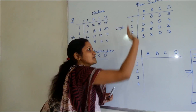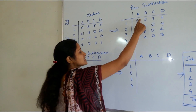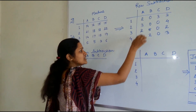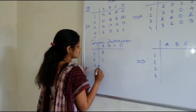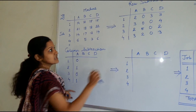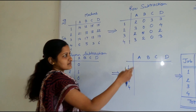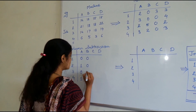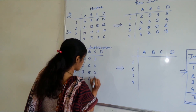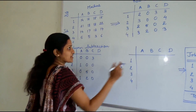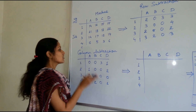The next step is column subtraction. The same method is followed but we consider each and every column separately. Consider the first column — the smallest number is 2, so subtract 2 from the complete column: 2 minus 2 is 0, 3 minus 2 is 1, 2 minus 2 is 0, and 3 minus 2 is 1. In the second column 0 is the smallest number, so subtracting 0 from all numbers leaves the column the same. The third column also has 0 as the smallest, so it remains the same. In the fourth column the smallest number is 2: results are 1, 2, 0, and 1. This is your column subtraction matrix.